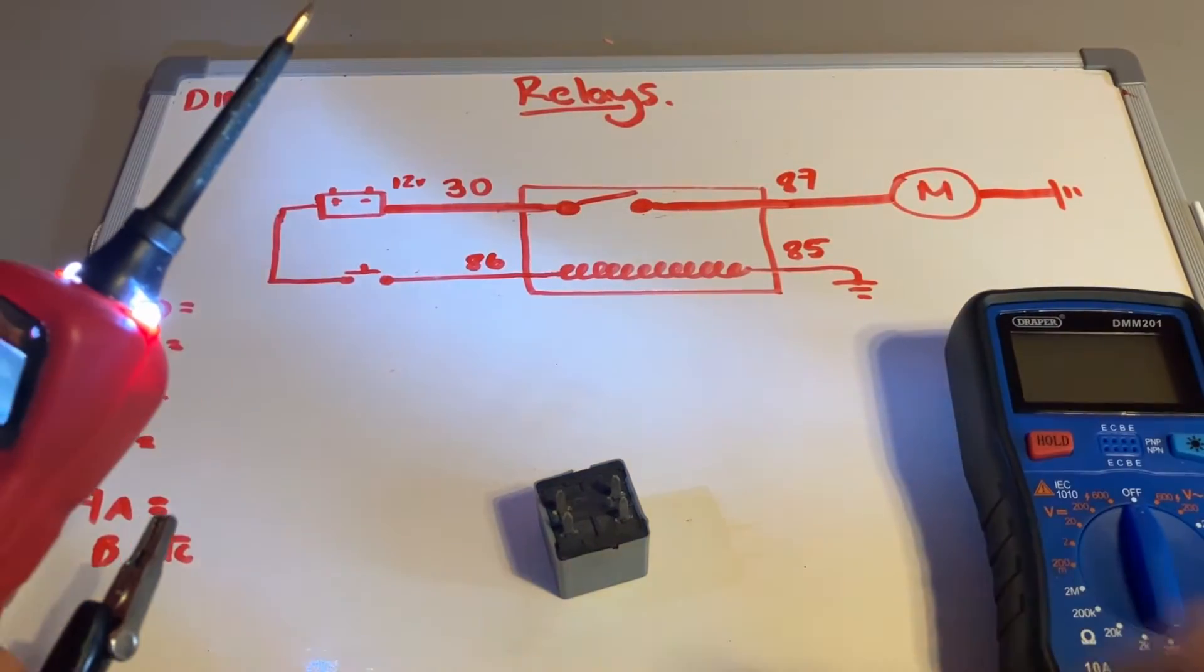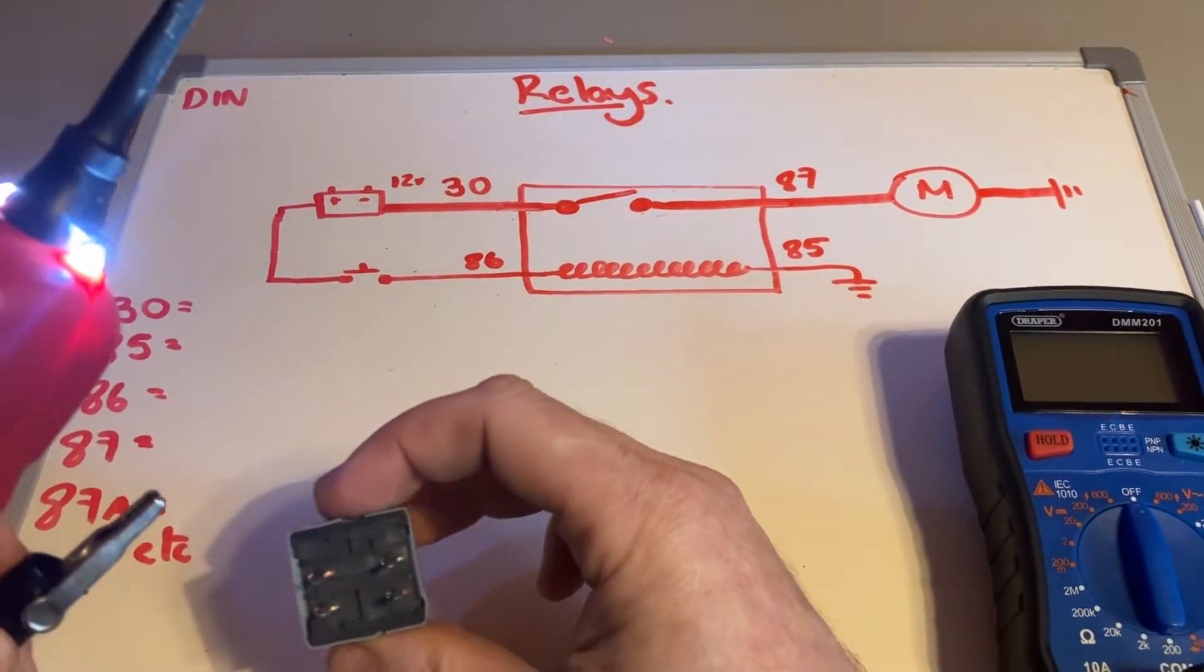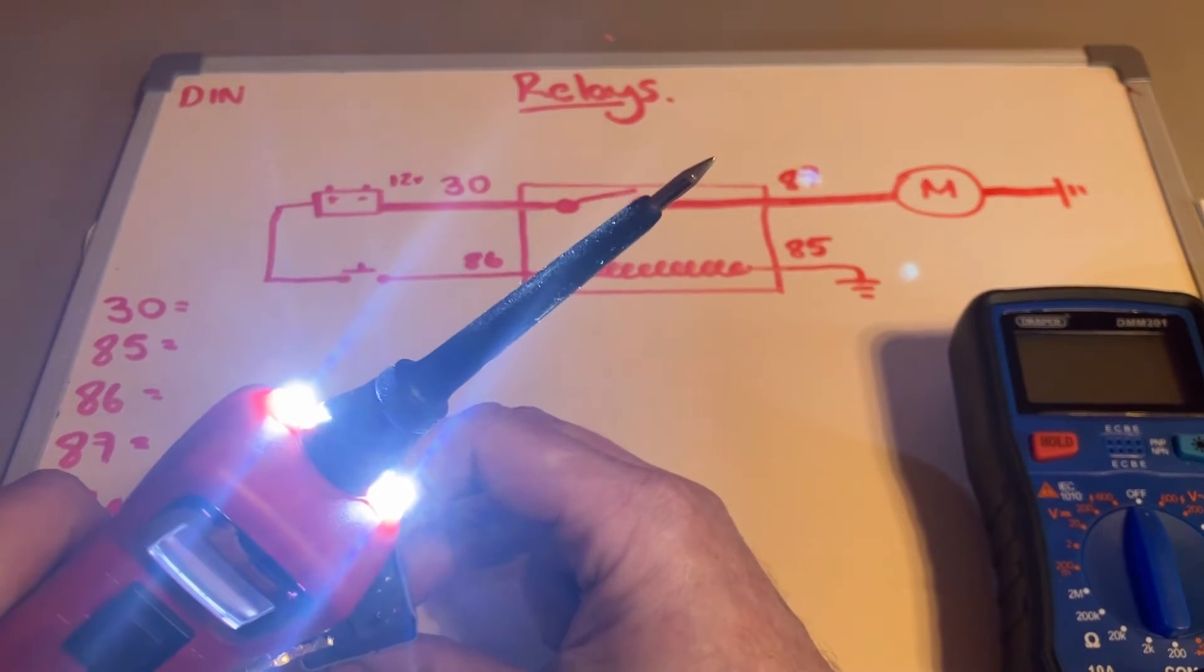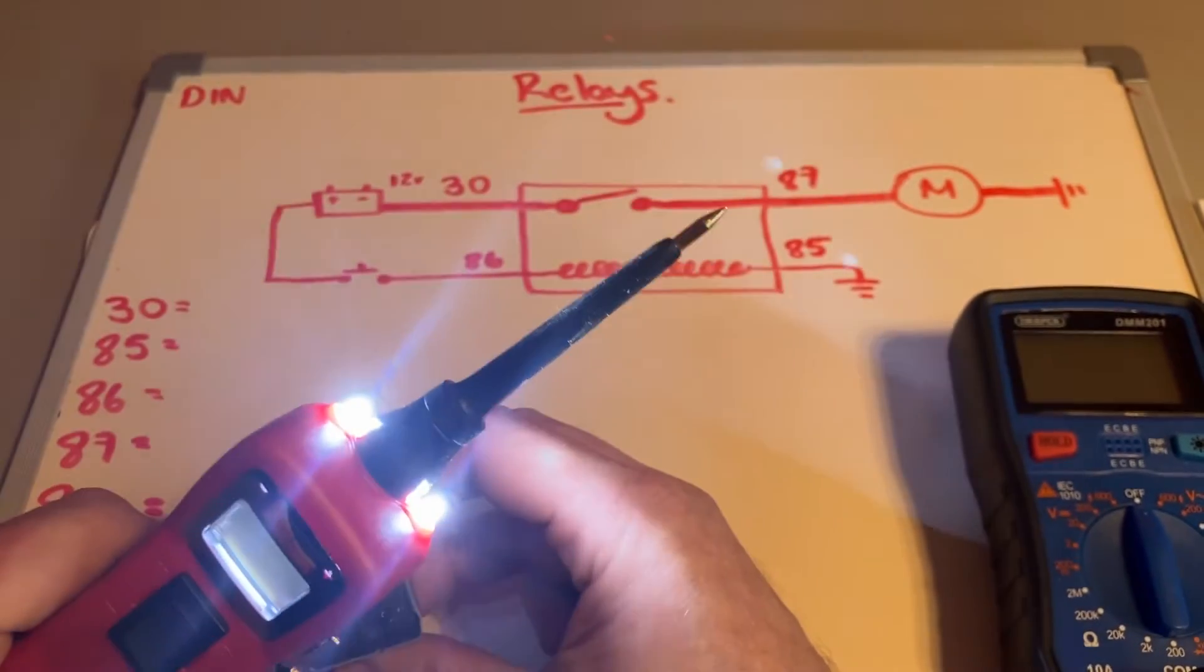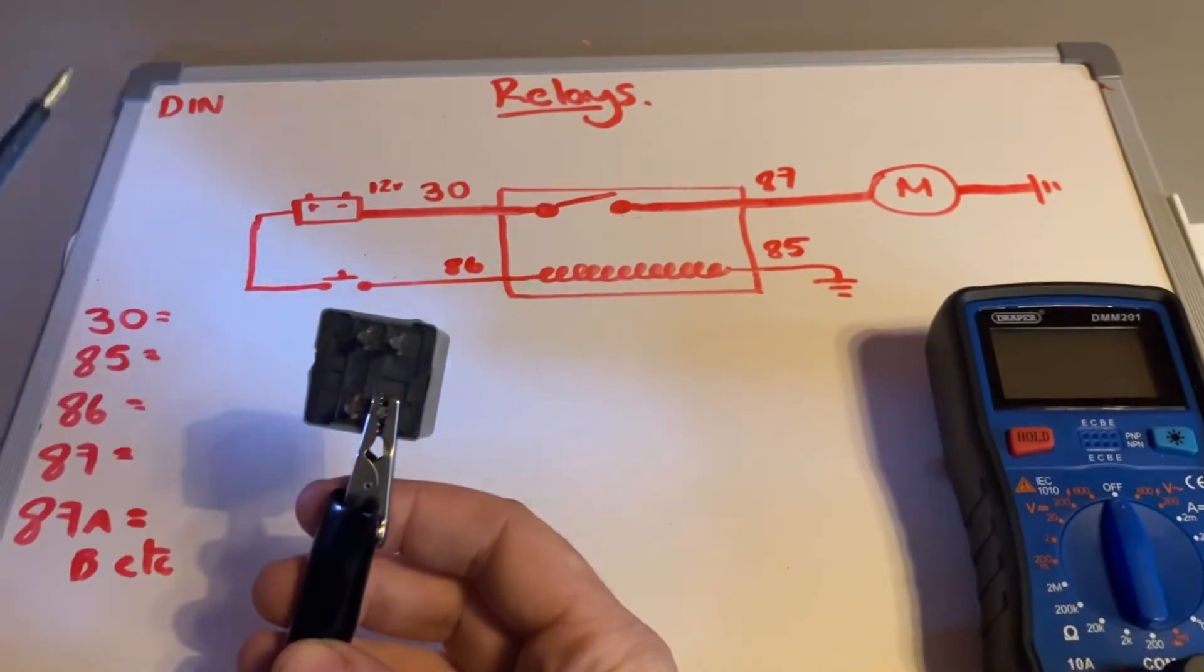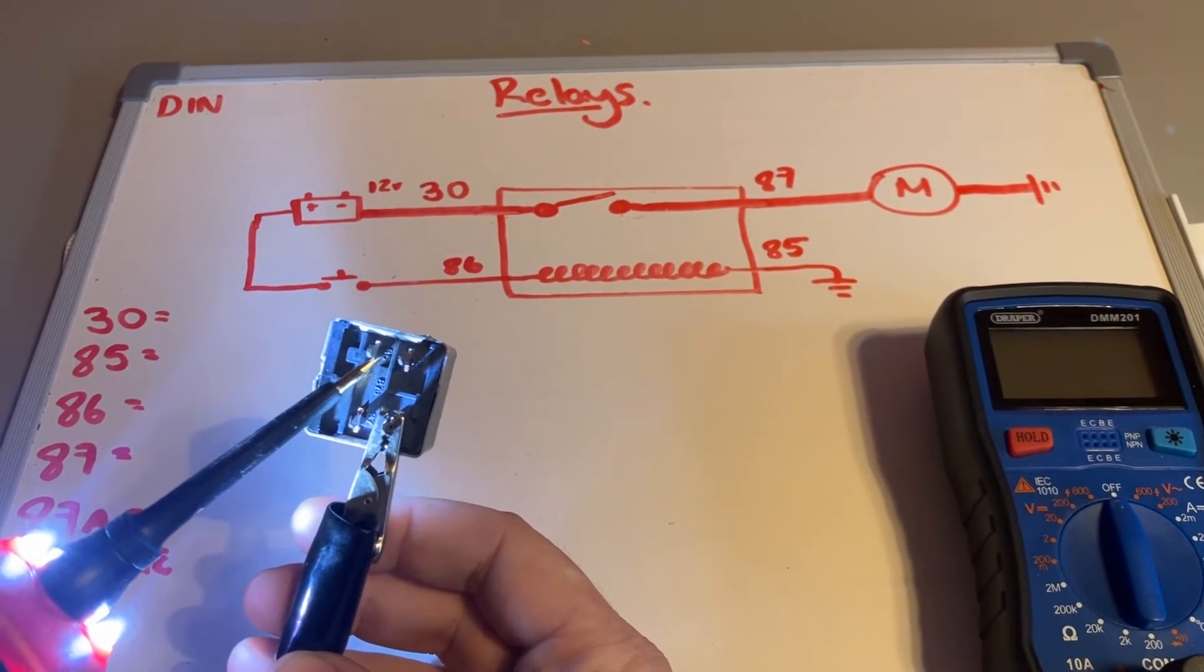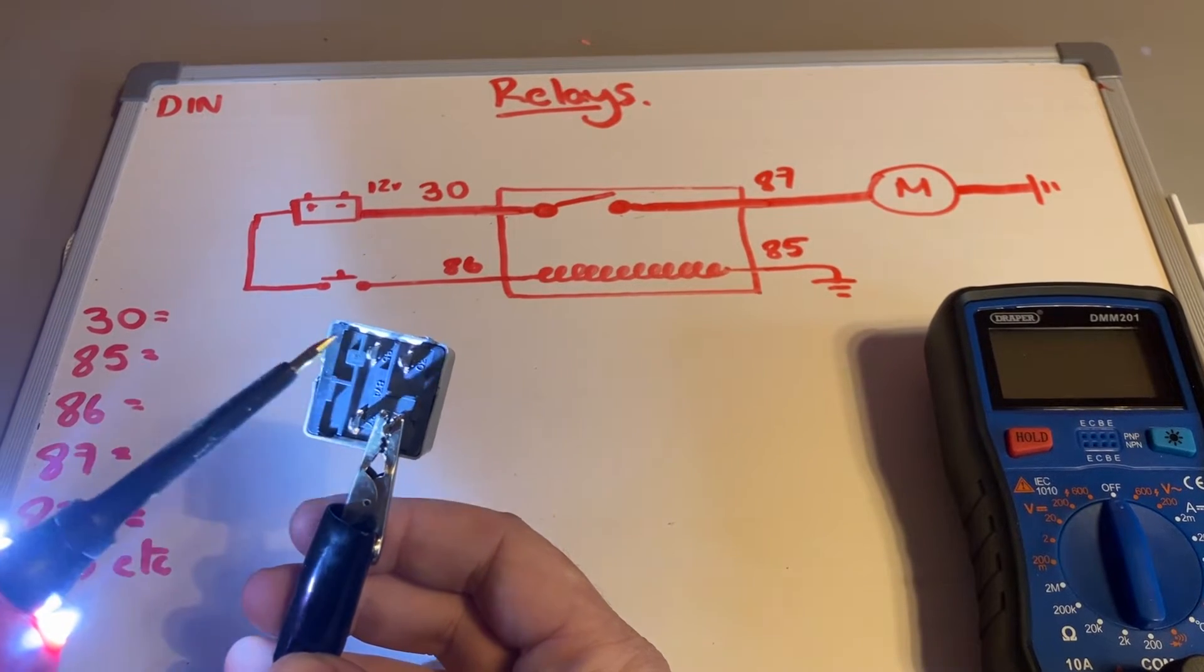So I'm just going to turn that off. So what I'm going to do here then is I'm going to put power through the coil and hopefully we can hear the switch close. So 85 and 86, so I've got this again connected to a battery supply. So hopefully we'll hear a click if it works. Hopefully you can hear that clicking - that's indicating to me that that relay is working.